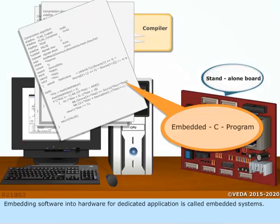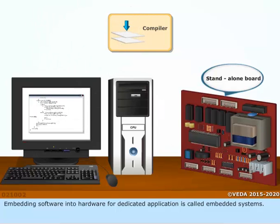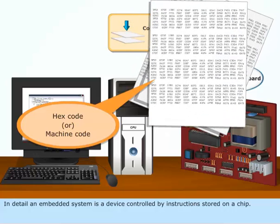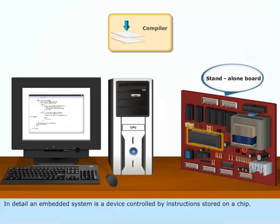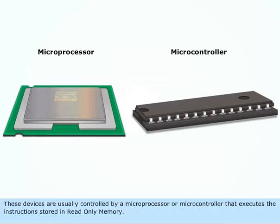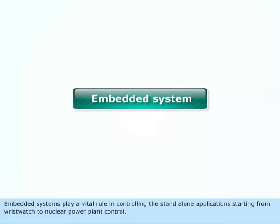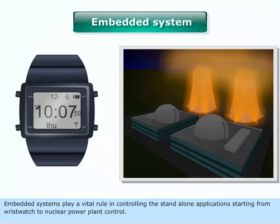Embedding software into hardware for dedicated application is called embedded systems. In detail, an embedded system is a device controlled by instructions stored on a chip. These devices are usually controlled by a microprocessor or microcontroller that executes the instructions stored in read-only memory. Embedded systems play a vital role in controlling standalone applications, starting from wristwatch to nuclear power plant control.